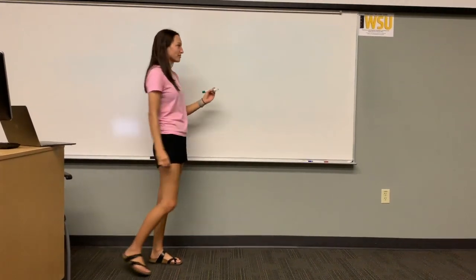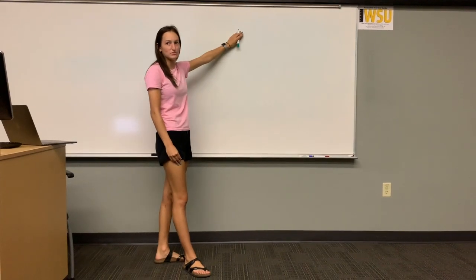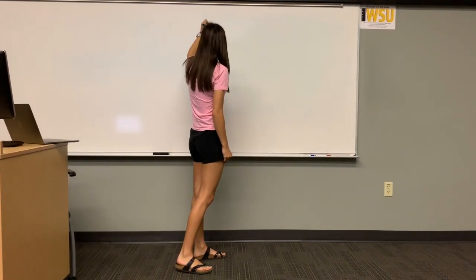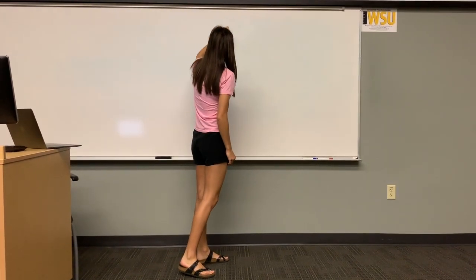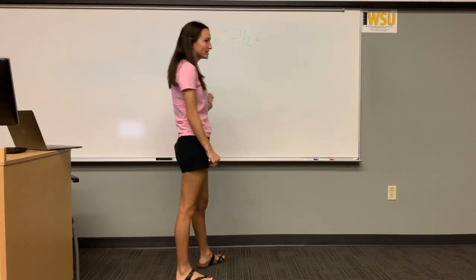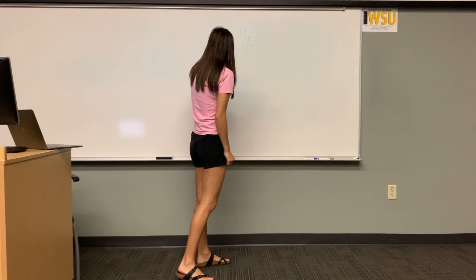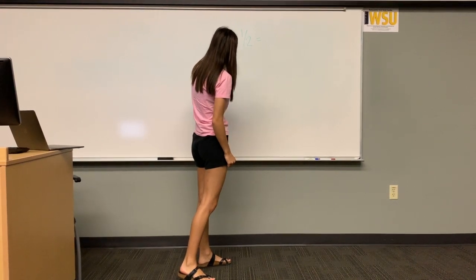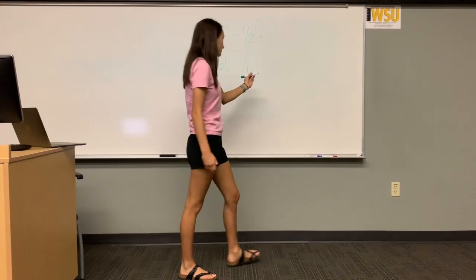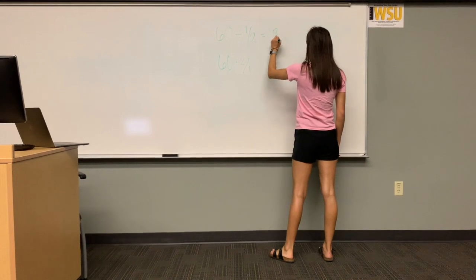For this problem we are going to show how dividing by a fraction is the same as multiplying the number by what's in the denominator. We are going to start with 60 divided by one half. Another way to look at this is setting it up as 60 times 2 over 1, which is the same as 60 times 2. So if you take 60 times 2, you get 120.